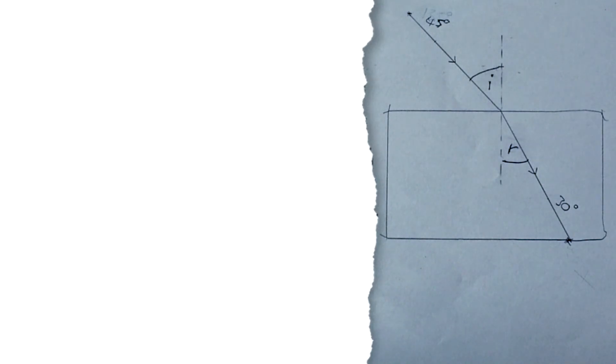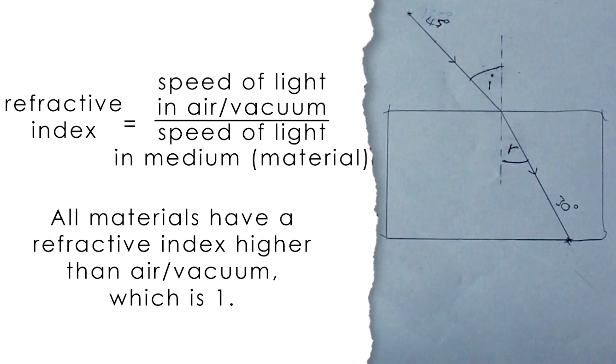Now refractive index tells you something else as well. It also tells you how much slower light goes in the medium compared to in a vacuum or in air, just normally. So if the refractive index is 1.4, that means that light travels 1.4 times slower in the perspex compared to in air.